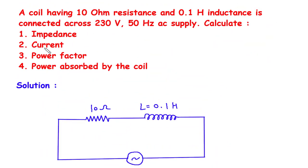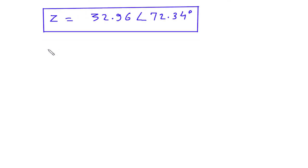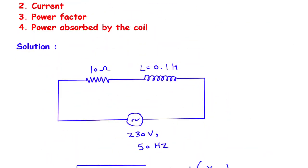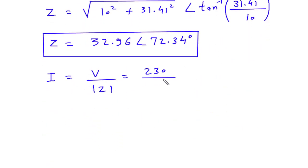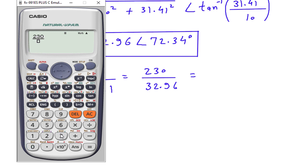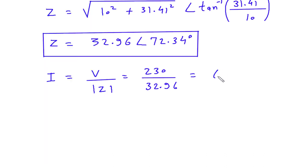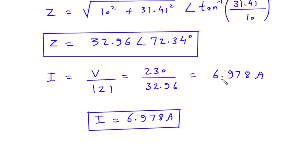Next we find current. Current I equals V divided by the magnitude of Z. The voltage V is 230 volts and Z is 32.96 Ohms. So I equals 230 divided by 32.96, which gives 6.978 amperes.